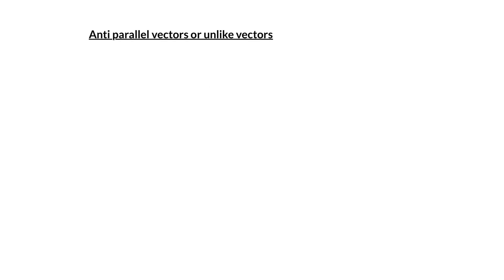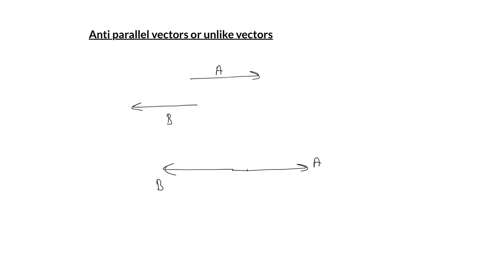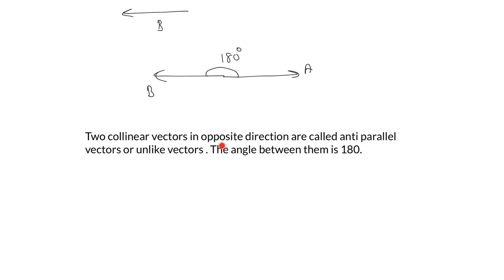Anti-parallel vectors or unlike vectors: vectors which are in opposite directions are called anti-parallel vectors. For example, if vector A is towards right and vector B is towards left, they are collinear but opposite in direction, making them anti-parallel vectors. The angle between two anti-parallel vectors is 180 degrees.